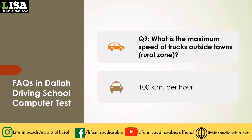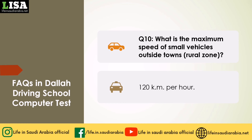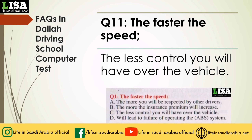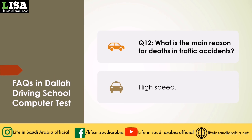Q9: What is the maximum speed of trucks outside town's rural zone? Answer: 100 km per hour. Q10: What is the maximum speed of small vehicles outside town's rural zone? Answer: 120 km per hour. Q11: The faster the speed? Answer: The less control you will have over the vehicle. Q12: What is the main reason for deaths in traffic accidents? Answer: High speed.